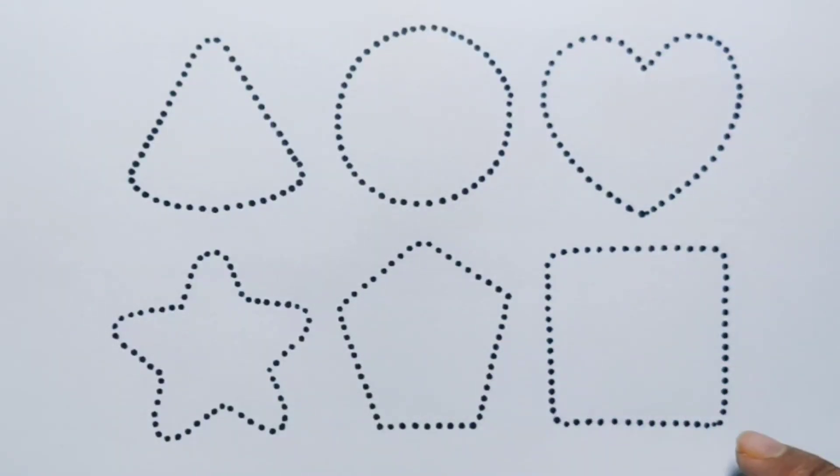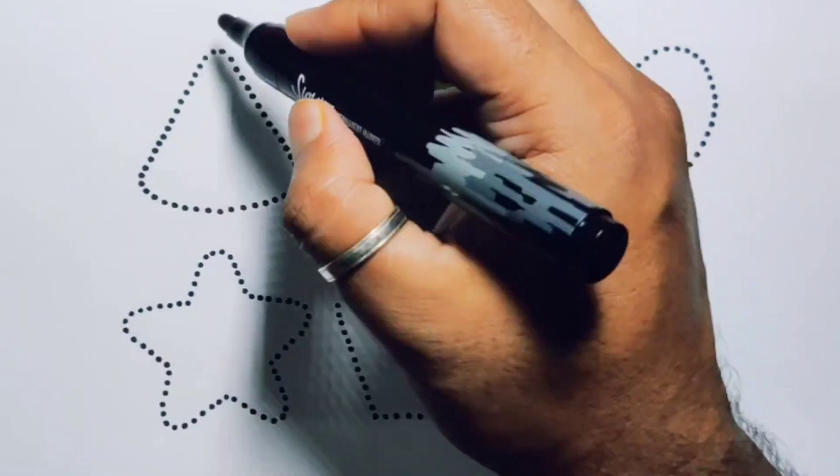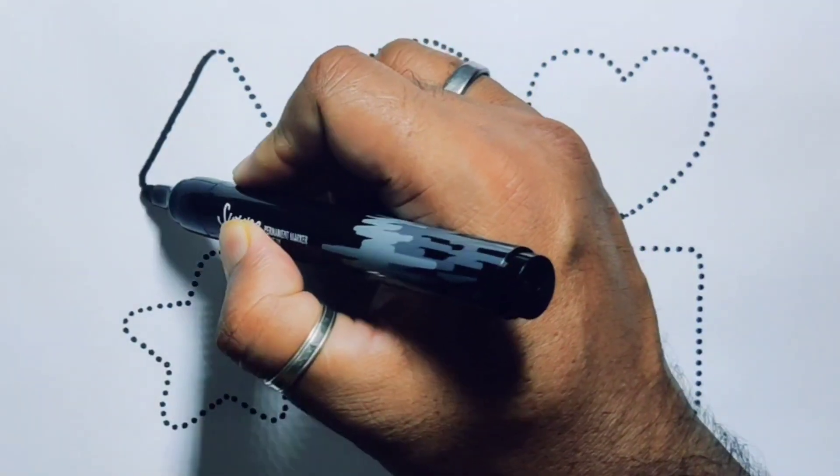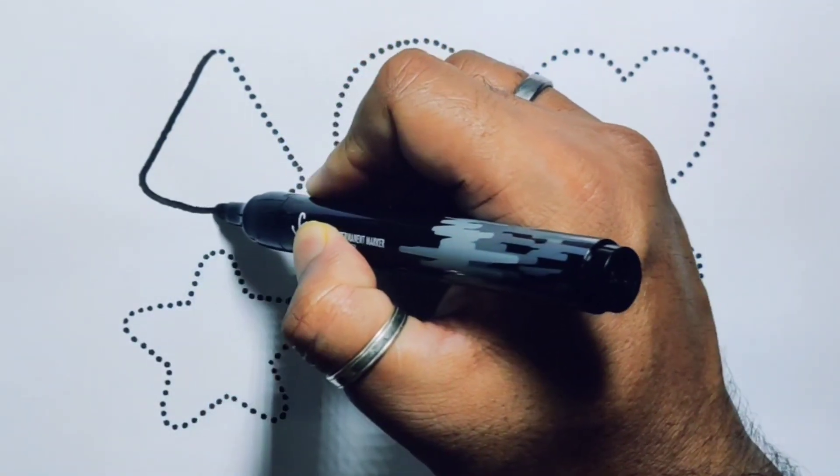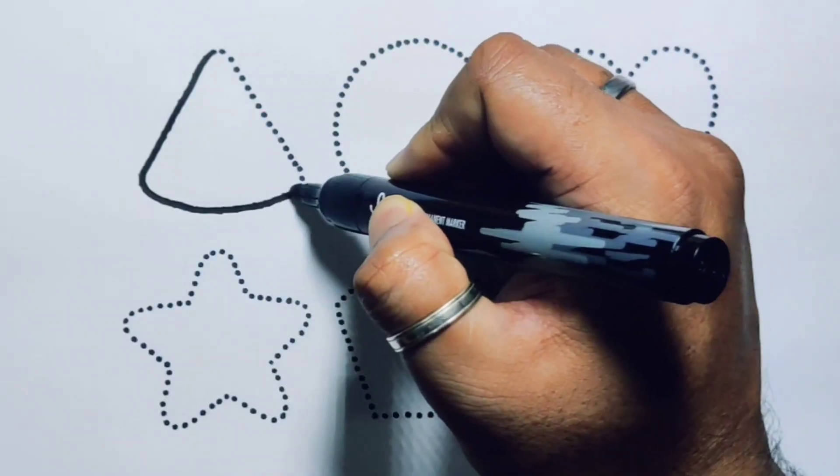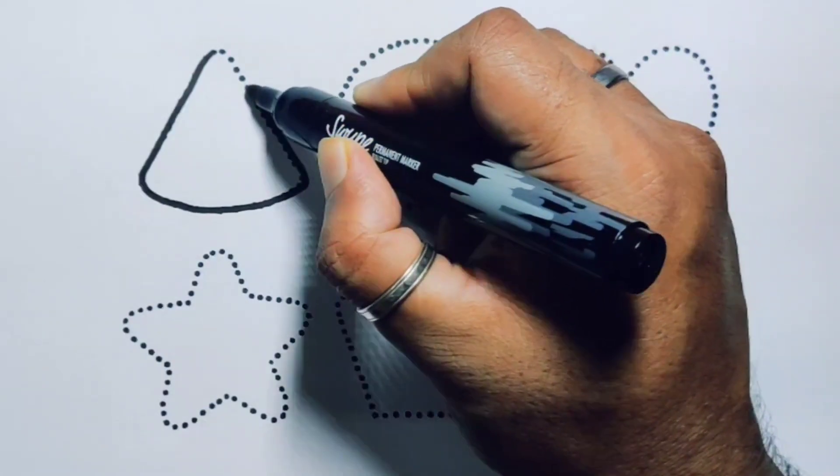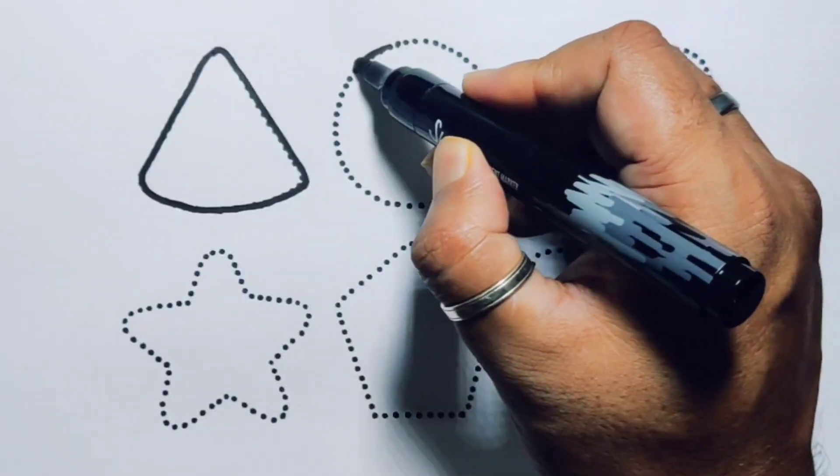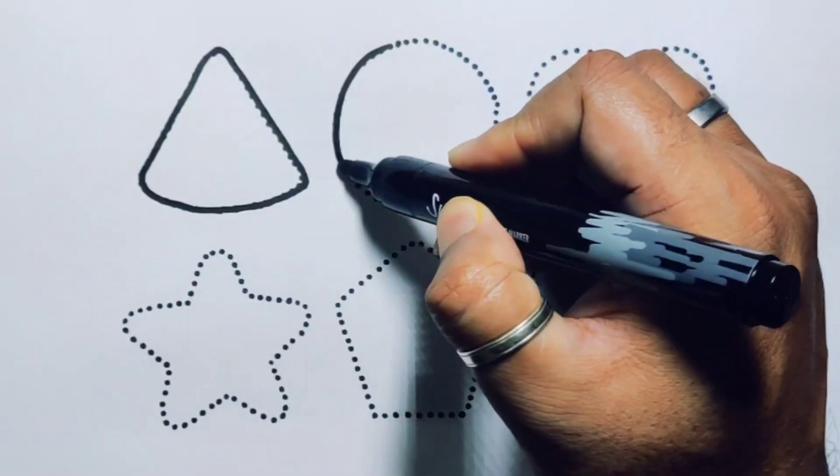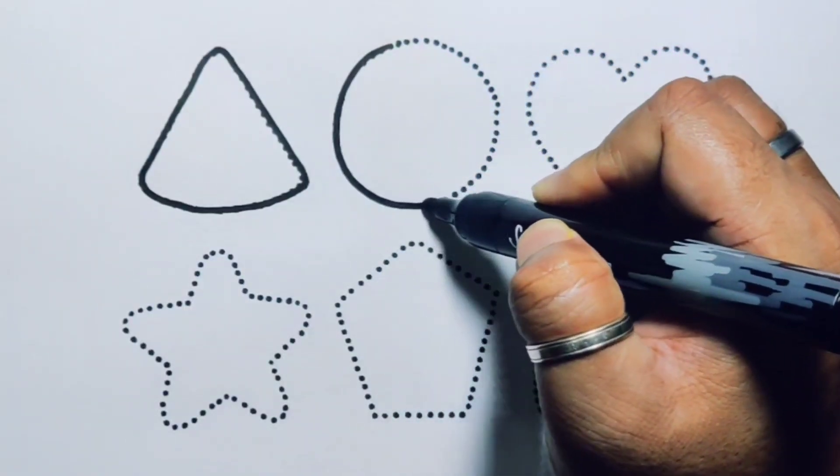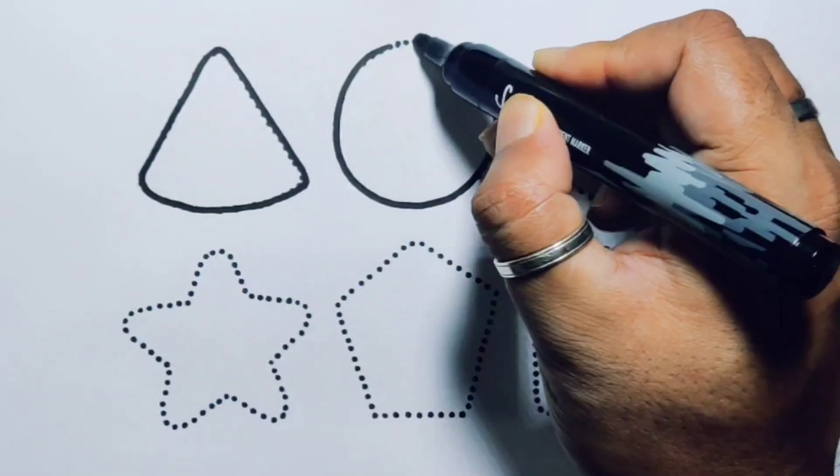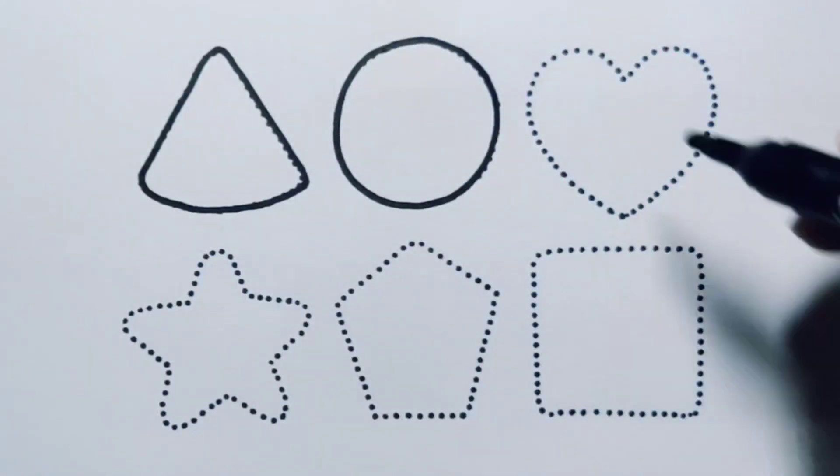pentagon, and square. First we are going to draw the shapes: triangle, circle, heart,